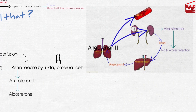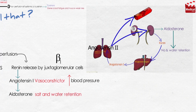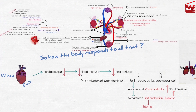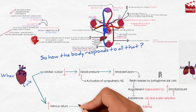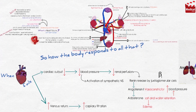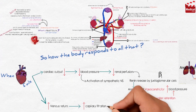Angiotensin-2 is a powerful vasoconstrictor that increases systemic blood pressure, while aldosterone acts on the kidney tubules to increase salt and water retention, which will increase systemic blood pressure and cause edema. Heart failure also increases venous return, which increases capillary filtration, causing edema.